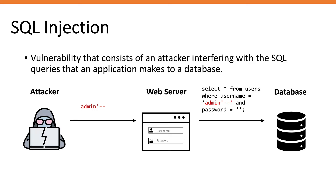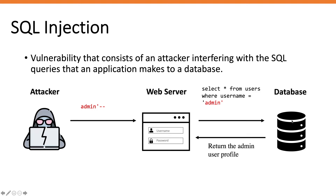However, if the application is vulnerable to SQL injection — if it doesn't use parameterized queries and doesn't validate user input — then any SQL characters or SQL code the attacker adds will become part of the query. The single quote closes the string for the username, and the double dash comments out the rest of the query. The query becomes: SELECT * FROM users WHERE username = 'admin'. Since admin is an existing username, the database returns the admin profile and the attacker gets logged in as admin.